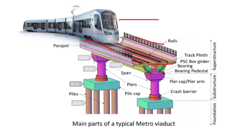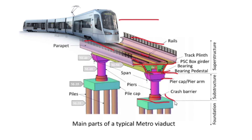The superstructure can be of many types: PSC box girder, U-girder, RCC I-girder with slab, solid slab, etc. The superstructure type determines the span, material, and cost. These are the bearings — also of many types: elastomeric, pot PTFE, spherical, etc. Then there are the pedestals, the pier cap or pier arm, crash barriers, pile cap, and piles.